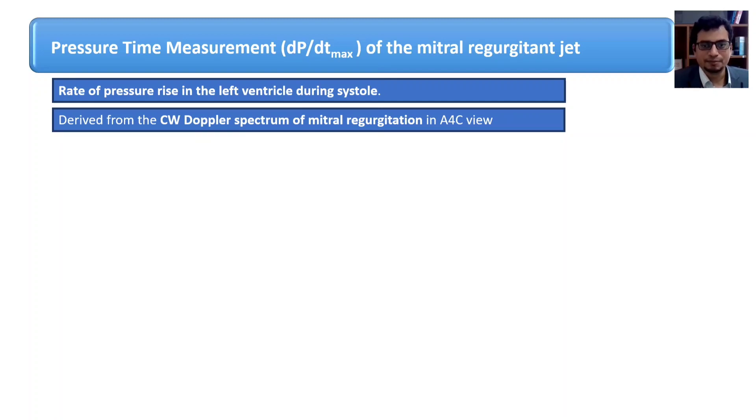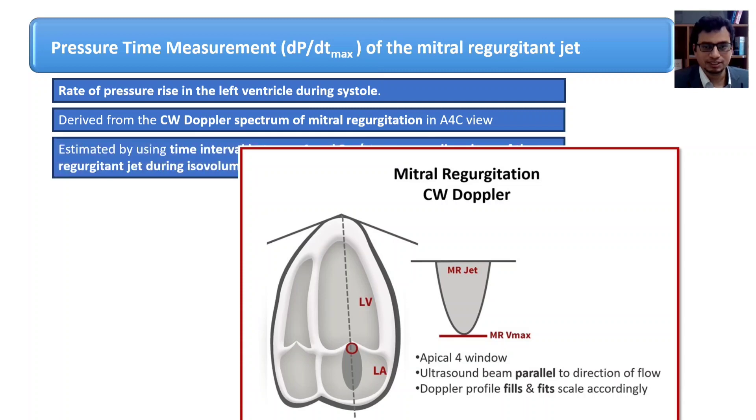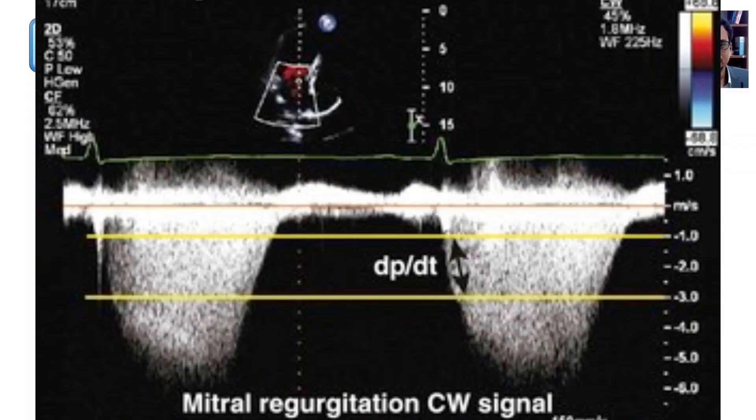The rise in pressure can be captured by the mitral regurgitation profile. The pulse wave Doppler is kept over mitral valve. Negative reflection of MR jet is obtained on the screen. The velocity is measured at two different time points: 1 meter per second and 3 meter per second.